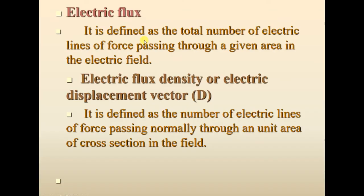Now let us move to another concept under dielectric medium — electric flux and electric flux density. A dipole moment has positive and negative charges separated by some distance. The region around a positive or negative charge is the electric field, also called the sphere of influence. This electric field is detected by placing a unit positive charge in the region, and the direction of the field is the direction along which the unit positive charge moves or tends to move — that direction is the electric flux or electric line of force.